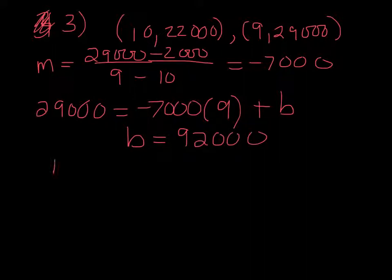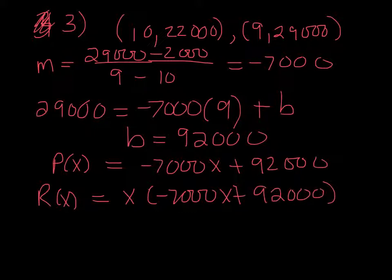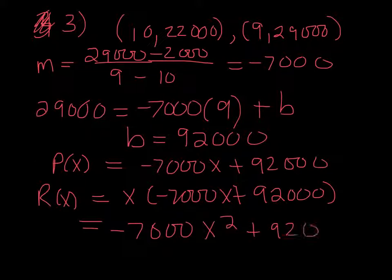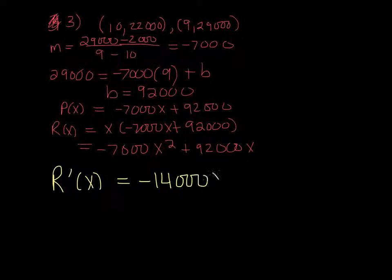So the equation that we just found, this is our price. And we get -7,000x + 92,000. To get revenue, we just need to multiply everything by x because the price that you're selling things at times how much you sold will give you the revenue. So it's -7,000x² + 92,000x.